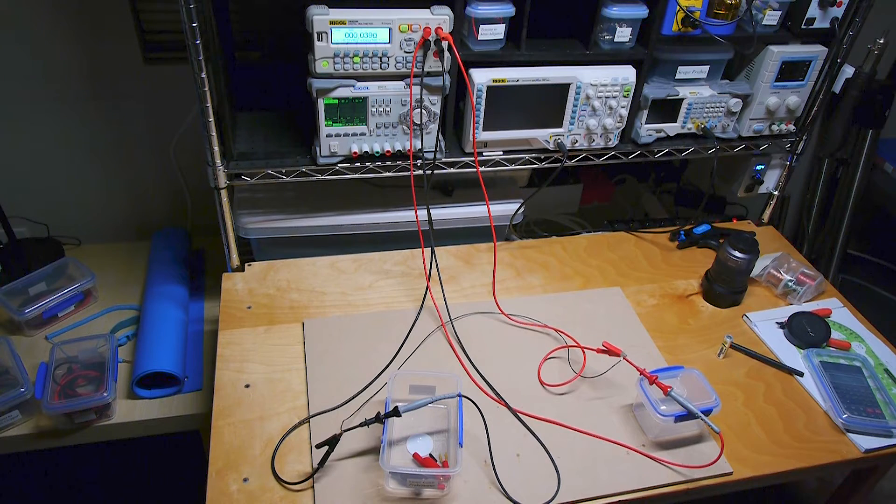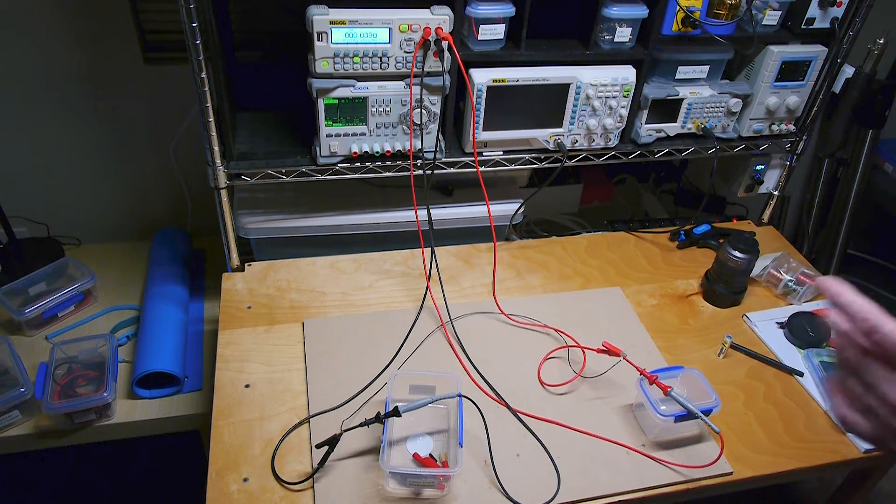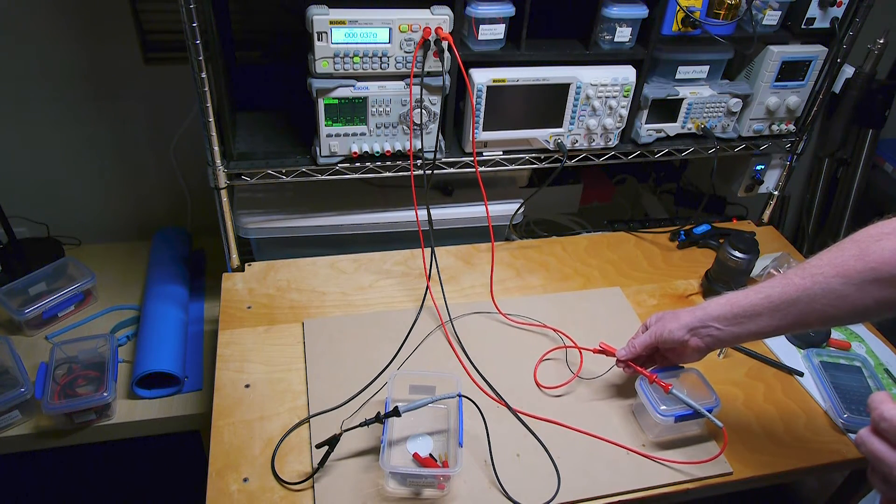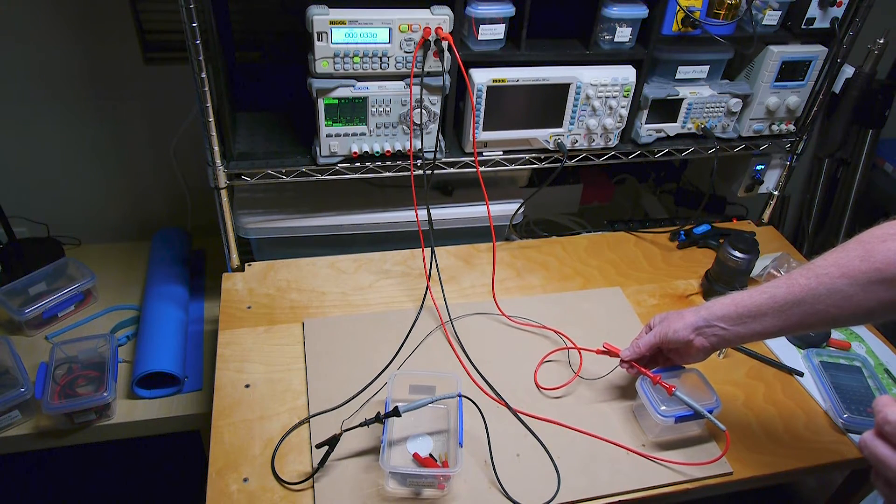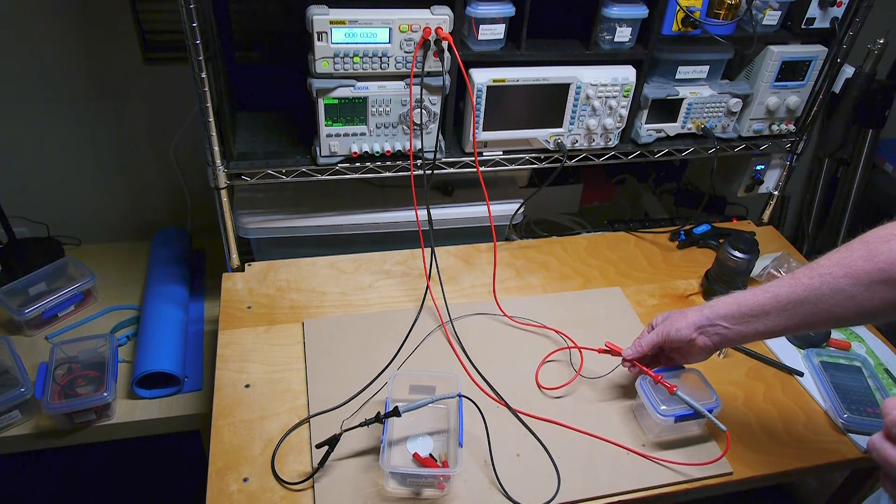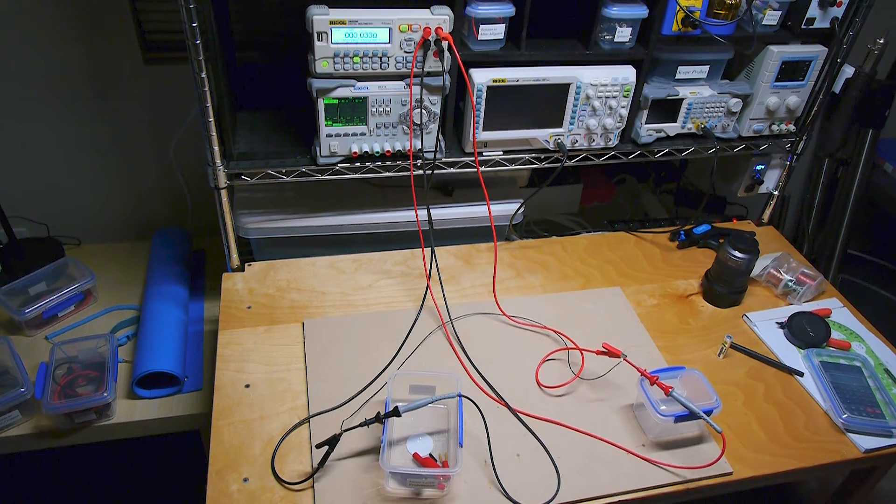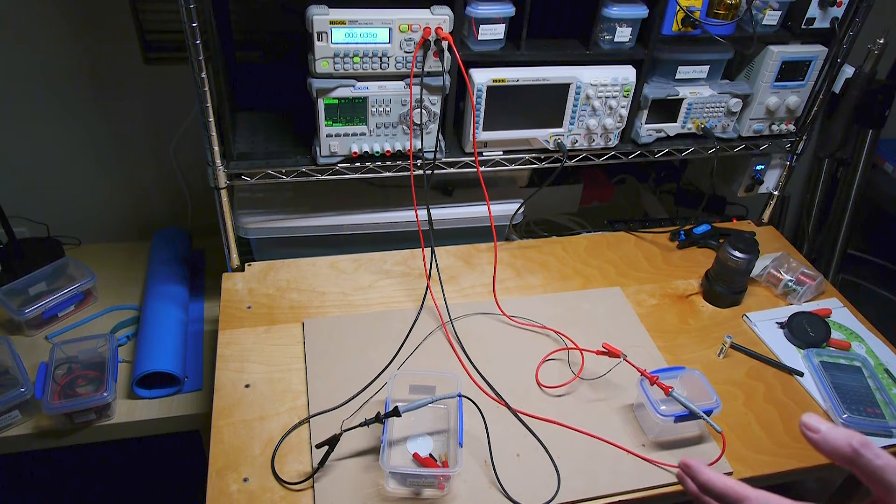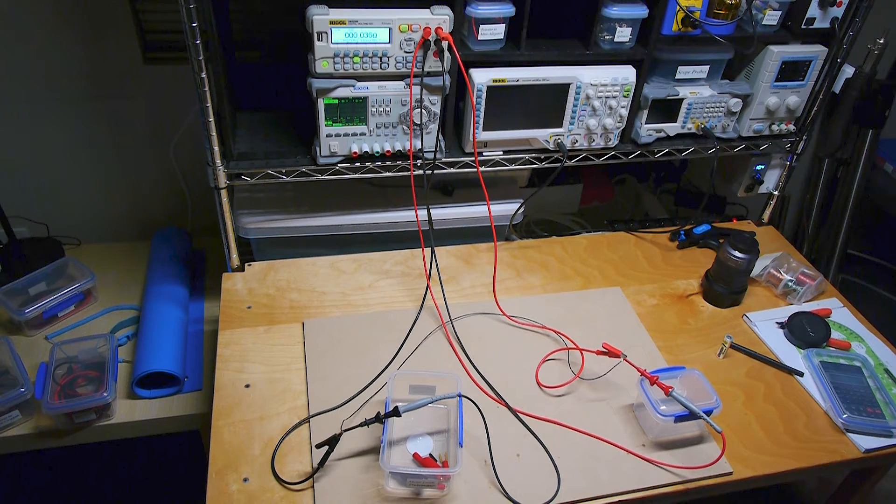Now watch what happens when I put my hand on the positive end of the circuit. We're right at 39 milliohms and it's going down. Now we're down 33, down to 32, it probably won't go much further than that. 31, okay, so 31 milliohms. Now it's going back up again. So I touch the negative side and the resistance goes up. I touch the positive side and the resistance goes down.